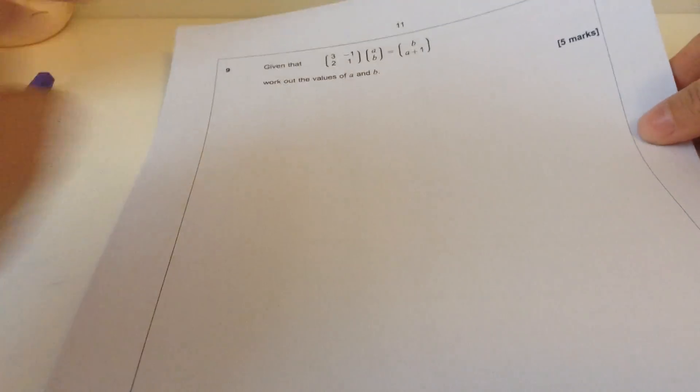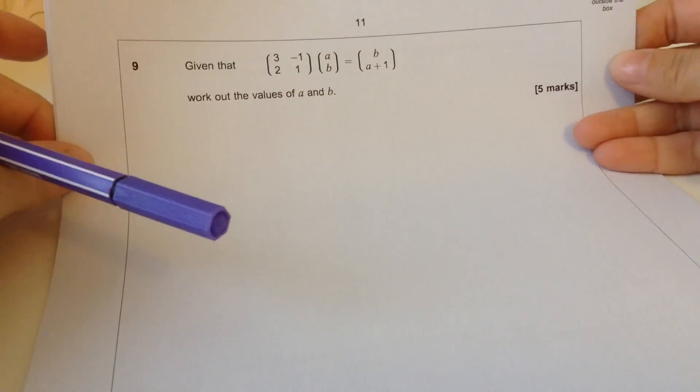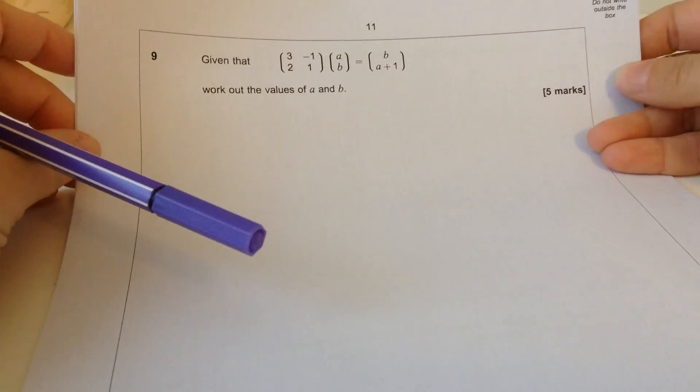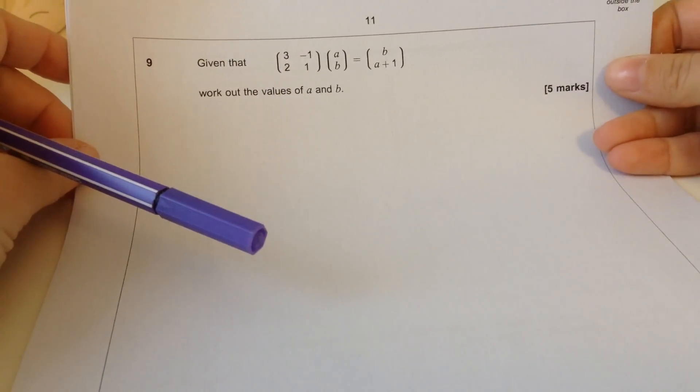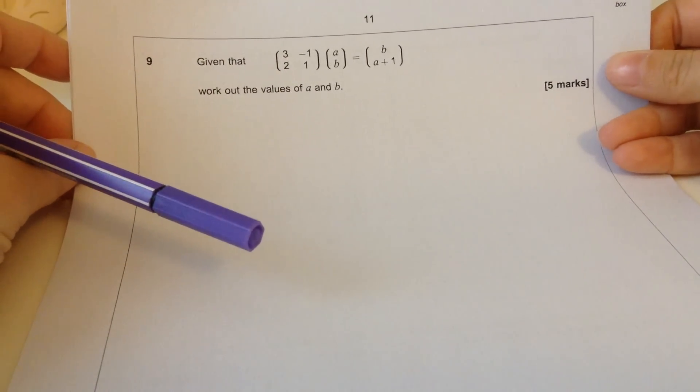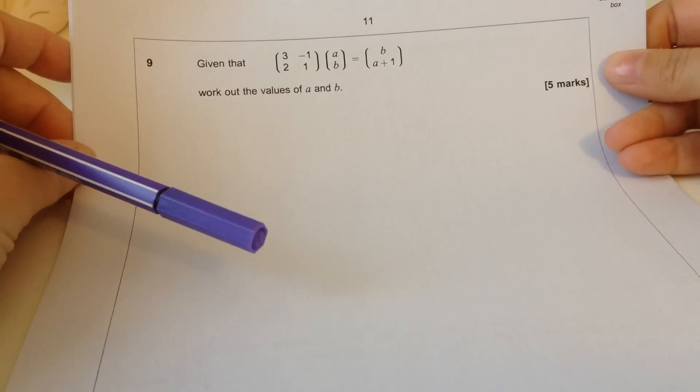Welcome back to this Further Maths Walking Talking Mock, and this is part 2. We're on question 9. We've got some matrices here. Given that 3, -1, 2, 1 times a, b equals b, a+1, work out the values of a and b.